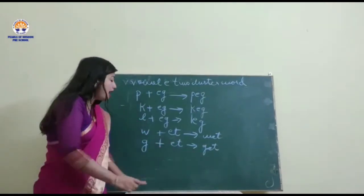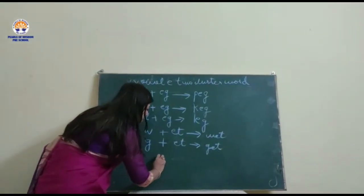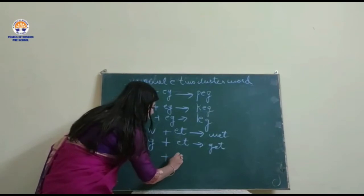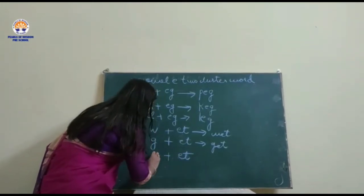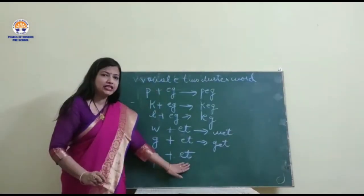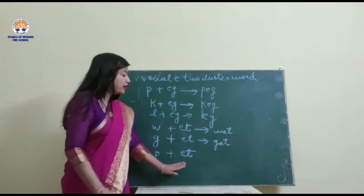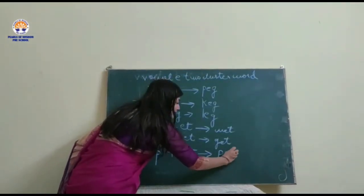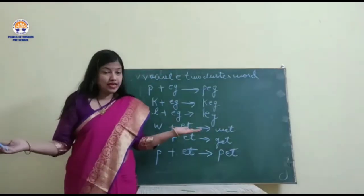G, E, T get. And by adding a consonant P in front of ET, what does it become? It becomes the word pet, and we keep pet at our homes. Isn't it?